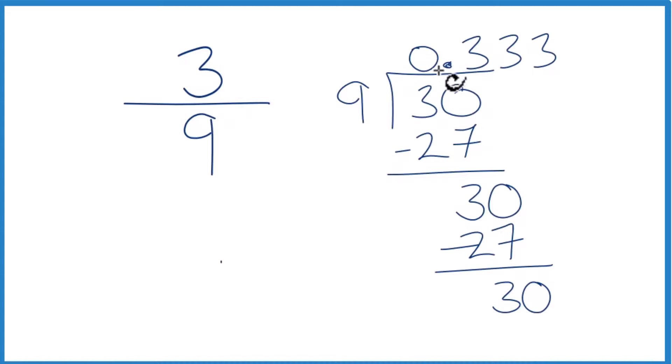So you can see that we keep getting 0.333 and the threes repeat. So the fraction 3 ninths, we could write that as a decimal, 0.333, and instead of having the threes repeat, we could get rid of these and just put a bar over the 3, and that would show that it repeats.